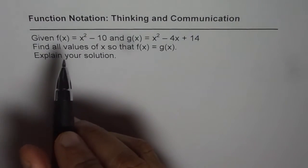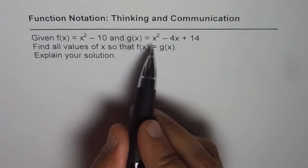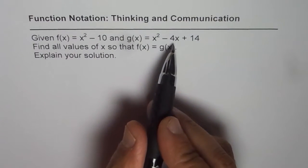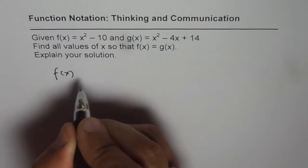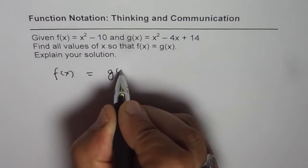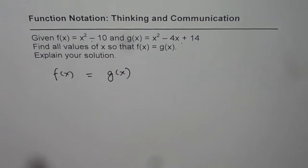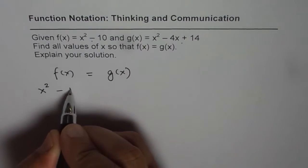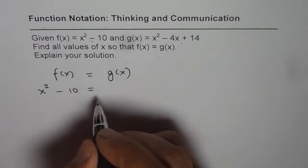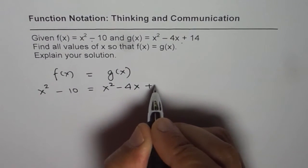Now, f of x is given to us as x square minus 10, and g of x is given to us as x square minus 4x plus 14. When we say f of x equals g of x, it really means that these two expressions are the same. So we can write this as x square minus 10 equals x square minus 4x plus 14.